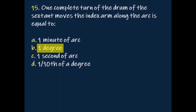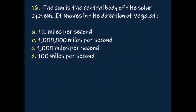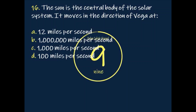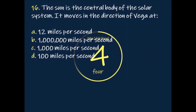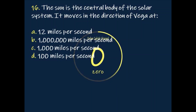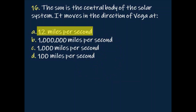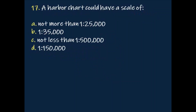Question: The sun is the central body of the solar system. It moves in the direction of Vega at 12 miles per second.